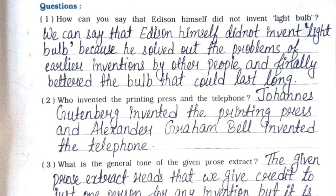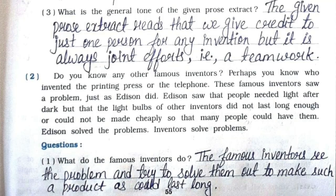He finally bettered the bulb so that it could last long. Second: who invented the printing press and the telephone? Johannes Gutenberg invented the printing press and Alexander Graham Bell invented the telephone. Third: what is the general tone of the given prose extract? The given prose extract reads that we give credit to just one person for any invention, but it is always joint efforts — that is, teamwork.